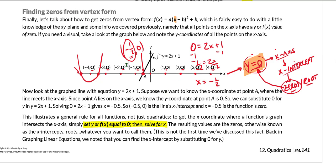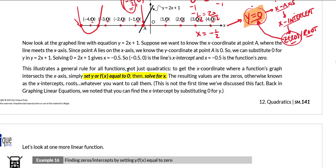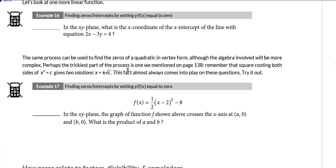We throw in 0 for f(x) or y and we solve for x. At the top of the next page, we're going to do another linear function. In example 16, you can probably do this on your own. In the xy-plane, what is the x-coordinate of the x-intercept of this line: 2x - 3y = 4? This question is as simple as 2x - 3(0) = 4. Remember, if we want the x-intercept, we make y equal to 0. Now we have 2x = 4, divide by 2, we get x equals 2. By the way, if you want to find the y-intercept, you would just make x equal to 0.